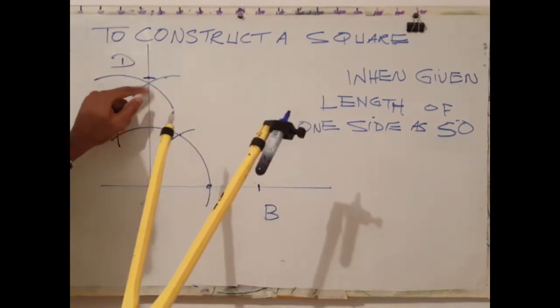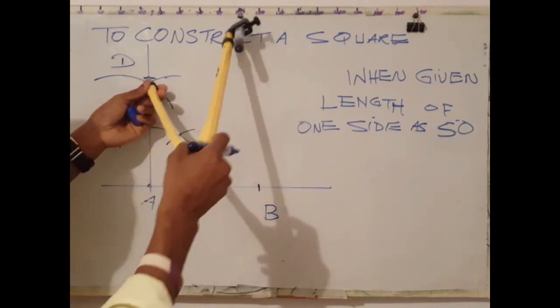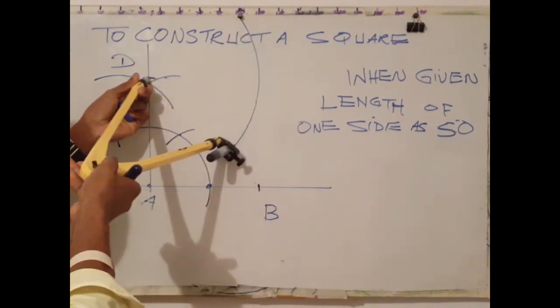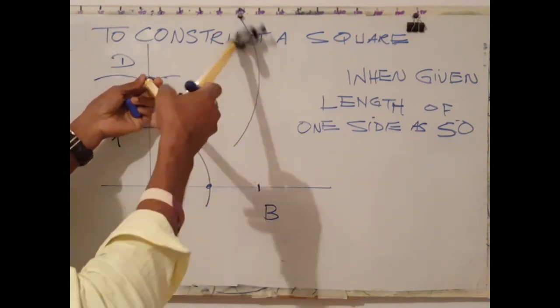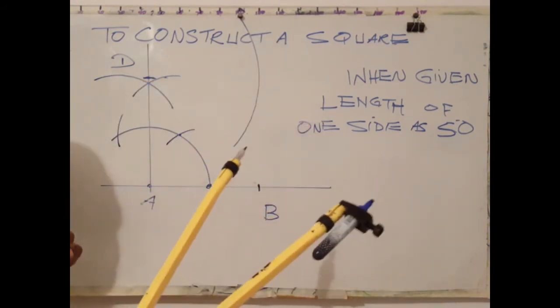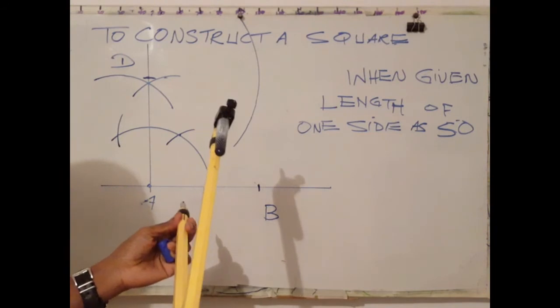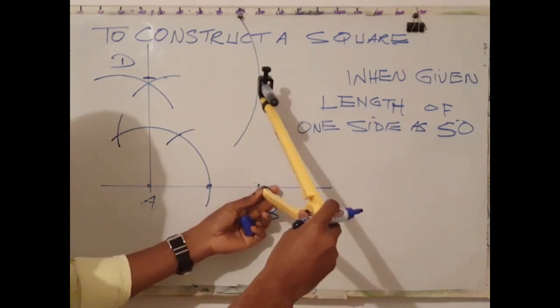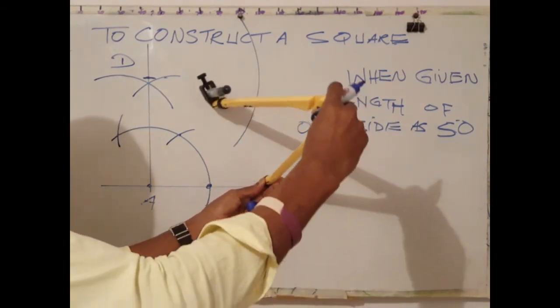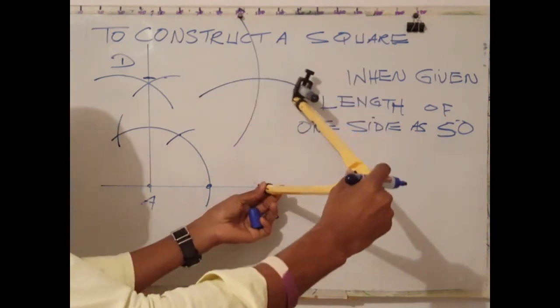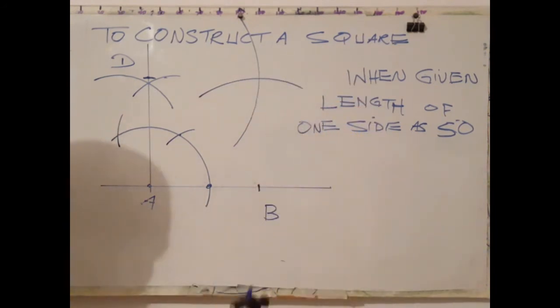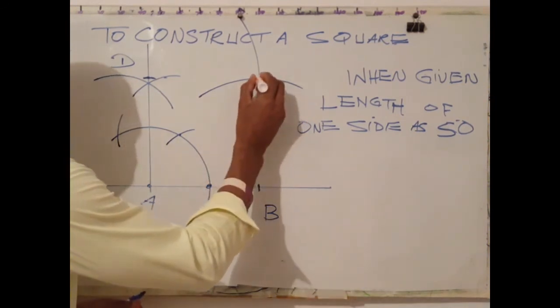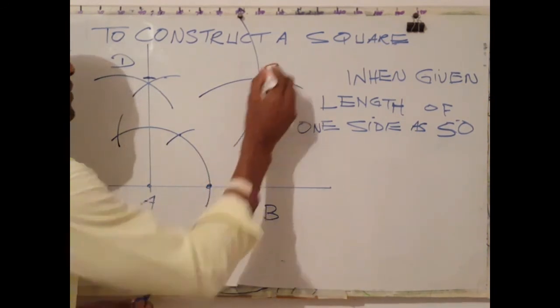With D as center, describe an arc to cut the arc that you have just drawn. Now, at the point where both arcs meet is our point C.